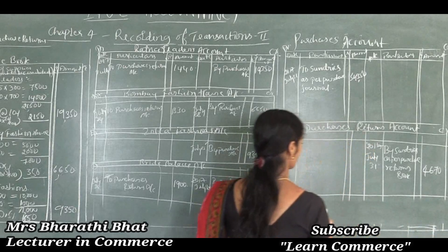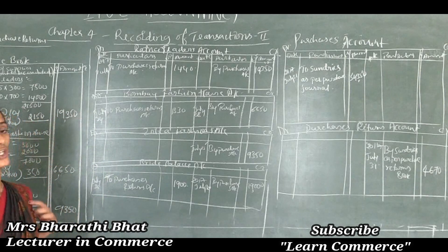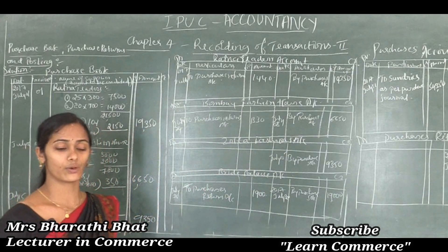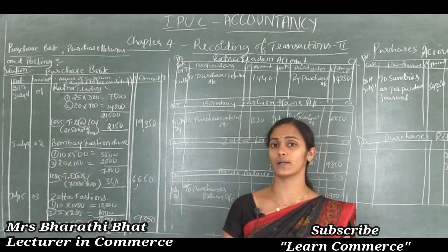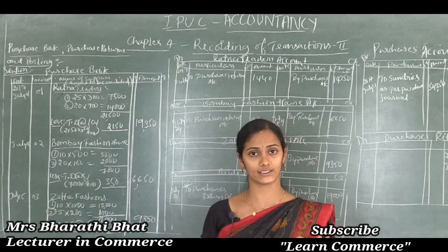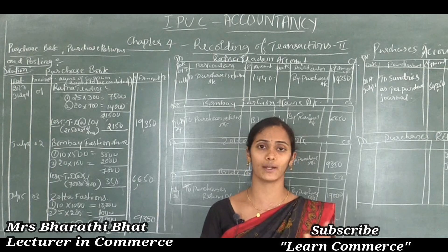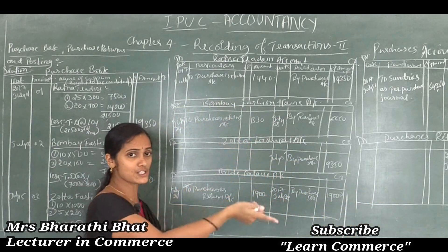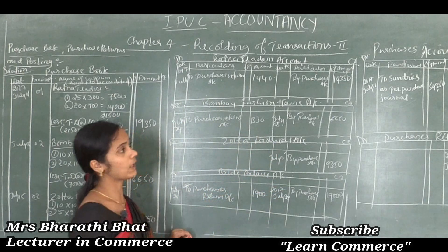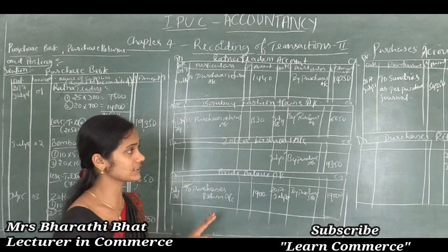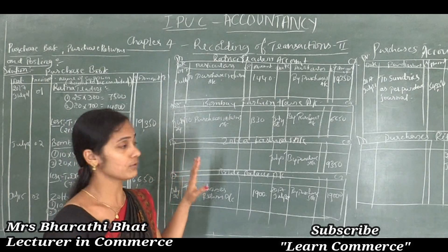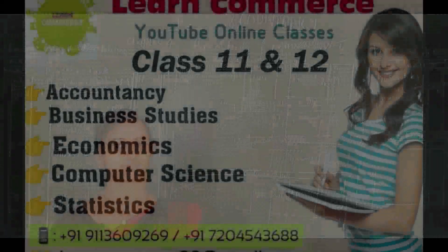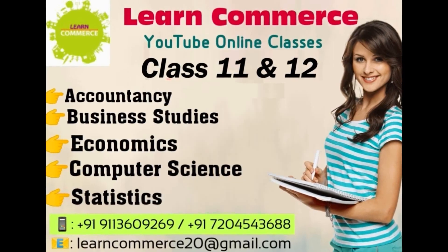This is how we can post these entries to the individual accounts. This type of question comes for 12 marks in subsidiary books. If the question says prepare sales book and sales return book and post them to the ledger accounts, then you prepare those books and post the entries similarly. You can get 12 out of 12 marks. I hope you understood how to post these entries to the individual accounts and how to prepare ledger accounts under subsidiary books. Thank you for watching this video. Don't forget to like our video and subscribe to our YouTube channel for all updates.